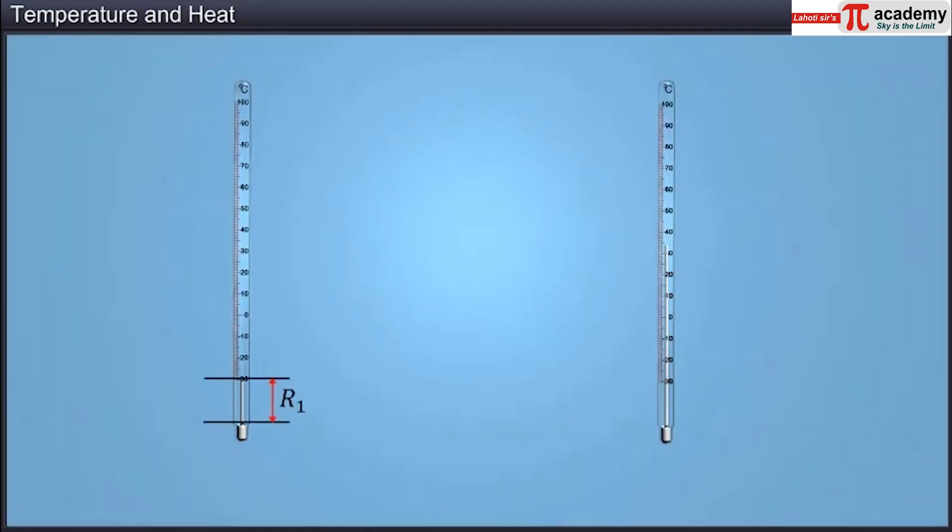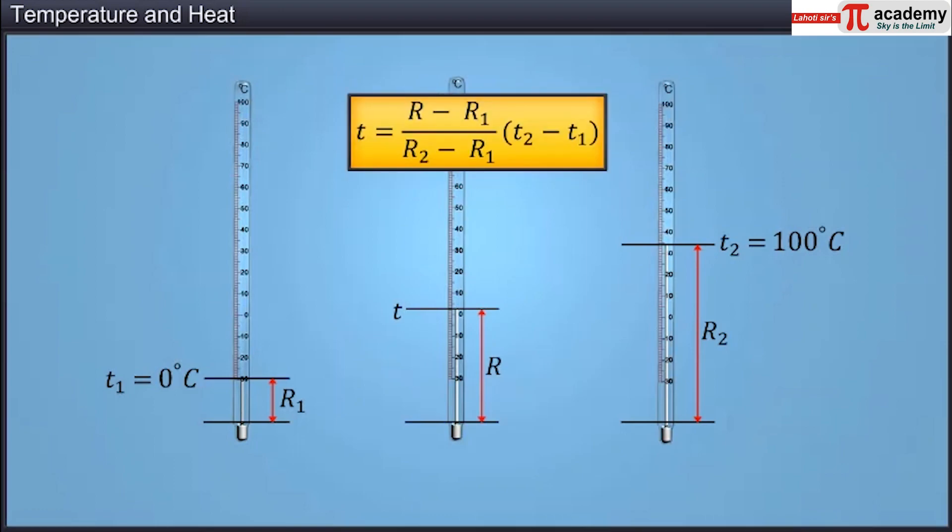If R1 and R2 are the values of the identified property at the two reference temperatures T1 and T2, then temperature T, when the property has a value of R, is given by T equals R minus R1 by R2 minus R1 into T2 minus T1.